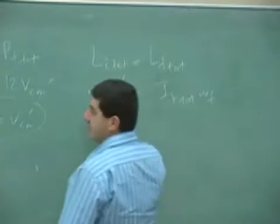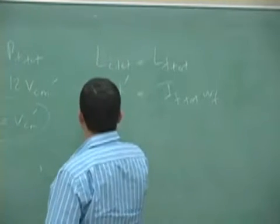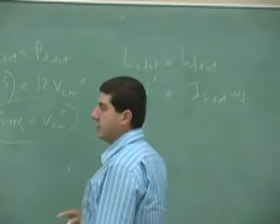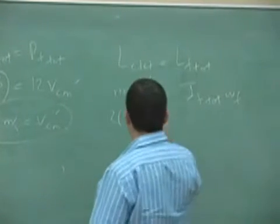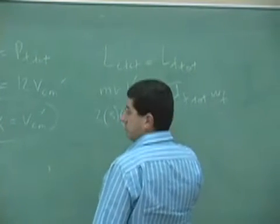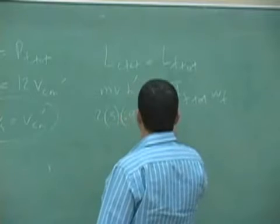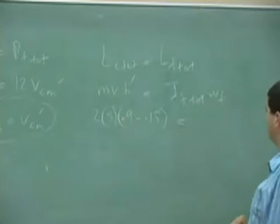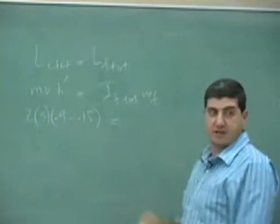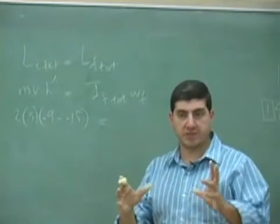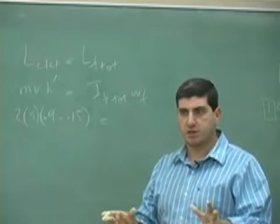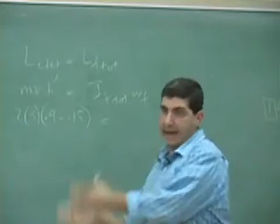So, we have here M V H prime. So, we have 2 times 3 times H prime, which is 0.9 minus 0.15, is equal to I final total. What is the angular momentum? What is the moment of inertia of the system after the collision?